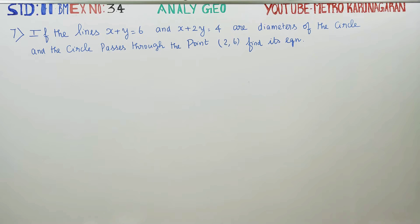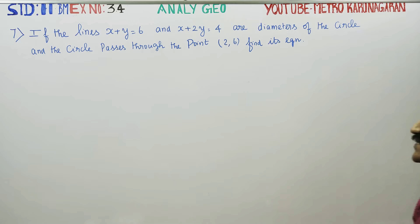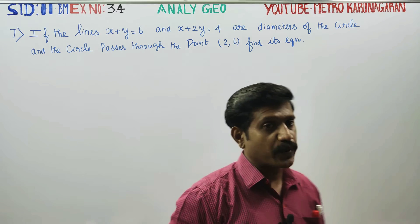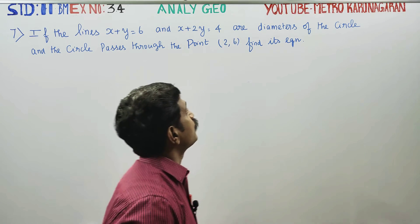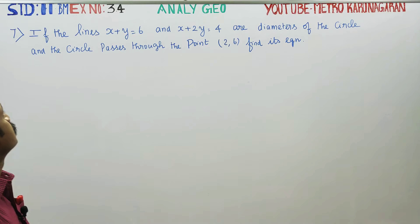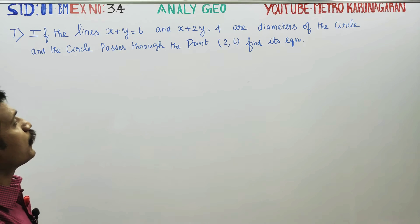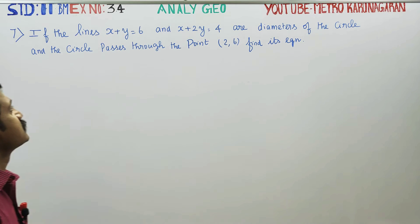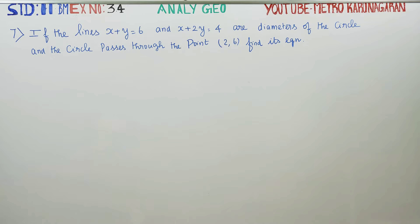Dear 11th standard business maths students, in exercise number 3.4, analytical geometry: if the lines x plus y equals 6 and x plus 2y equals 4 are the diameters of a circle passing through the point (2, 6), find its equation.